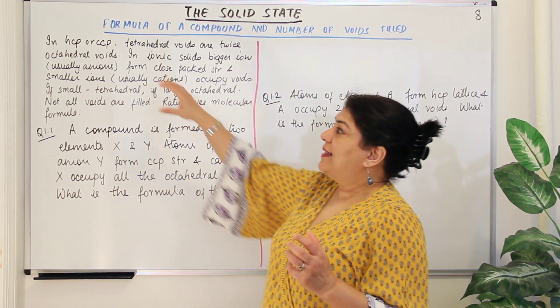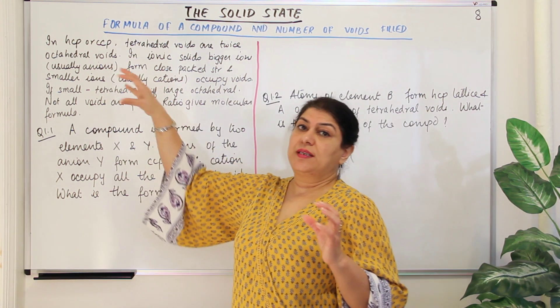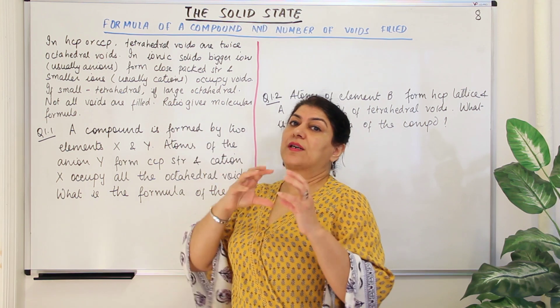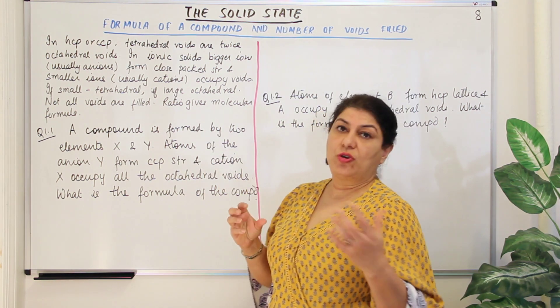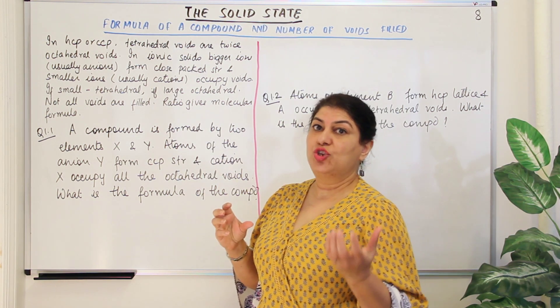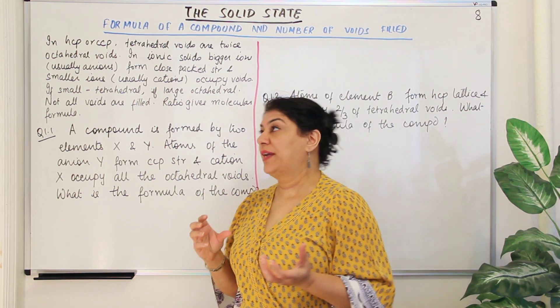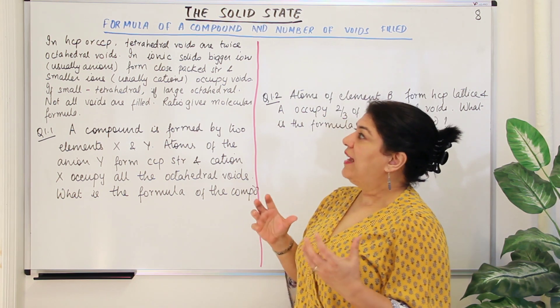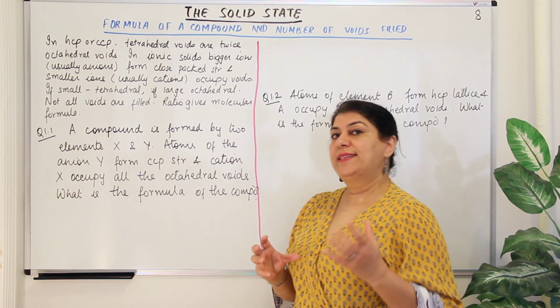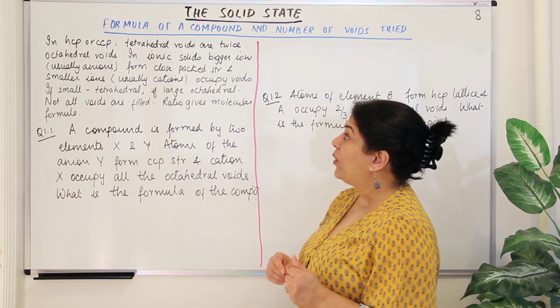Let us say the cubic arrangement is HCP or CCP — cubic closed packed or hexagonal closed packed structure. We have tetrahedral voids and octahedral voids in these arrangements.